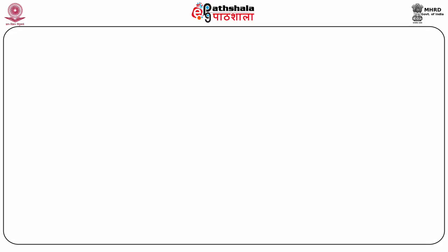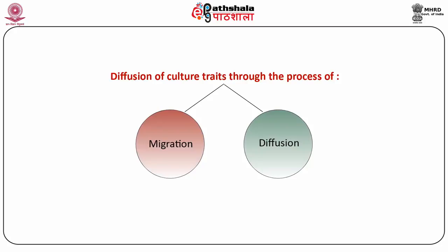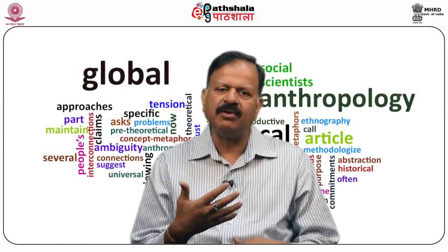Parallel to evolutionism came another theory called diffusionism. Diffusionism studied how culture traits, cultural practices, customs and traditions got diffused across cultures — possibly due to migration, when people moved from one territory to another carrying culture traits, or through diffusion proper, when culture traits moved from one area to another without the people moving. Both diffusion and evolution lacked substantial evidence and relied on unavailable written history, receiving major criticism for being highly conjectural, speculative, and unscientific.